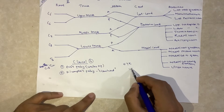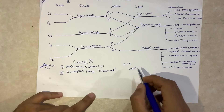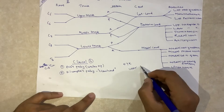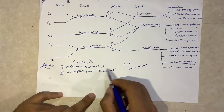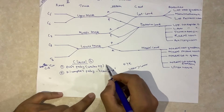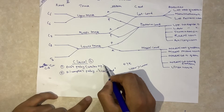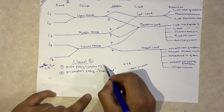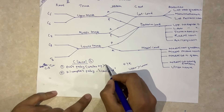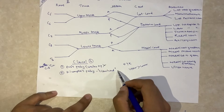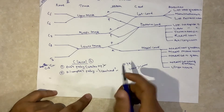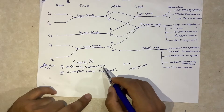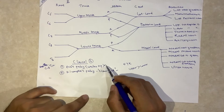In the brachial plexus, the upper trunk comes first and then the lower trunk. Erb's palsy is due to injury in the upper trunk, and Klumpke's palsy is due to injury in the lower trunk.